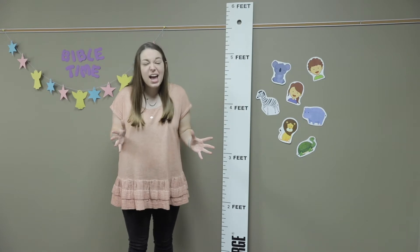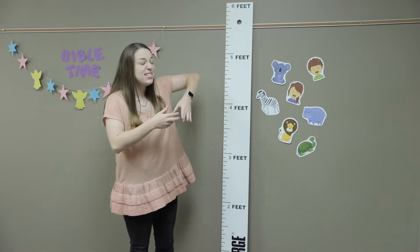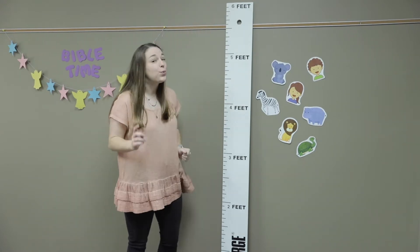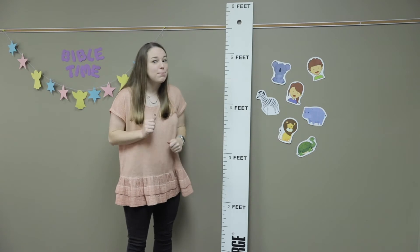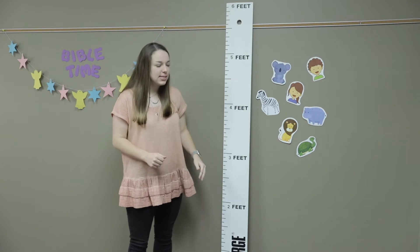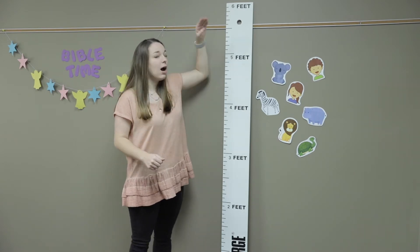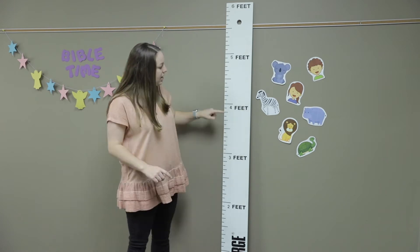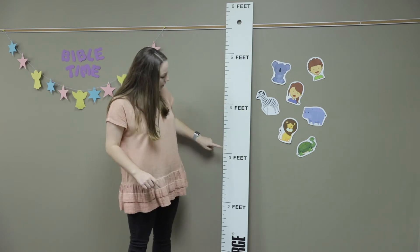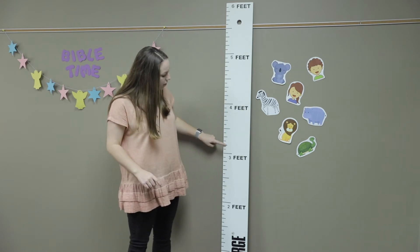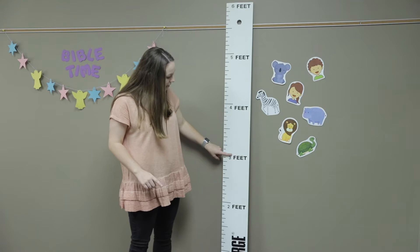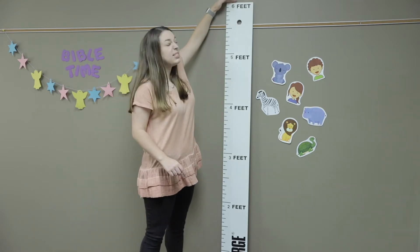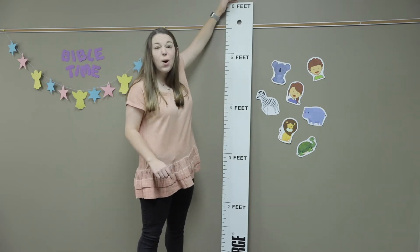For our lesson today, I brought us a giant ruler. A ruler helps us measure things, particularly today our height. It has feet and inches on it. The inches are the little marks, while the feet are these big marks, and it goes all the way up to six feet tall.